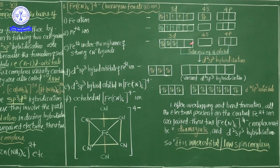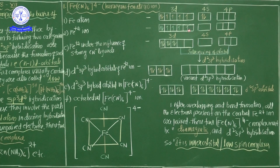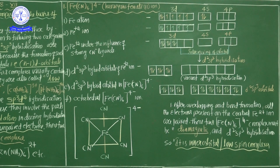After hybridization, iron has 6 d²sp³ hybrid orbitals. Each CN⁻ group donates a lone pair of 2 electrons into each hybrid orbital. All 6 d²sp³ hybrid orbitals are completely filled with electrons from the 6 cyanide ligands, forming 6 coordination covalent bonds.